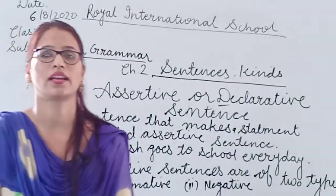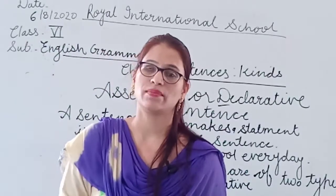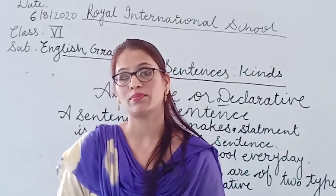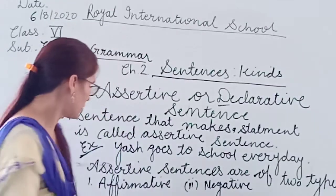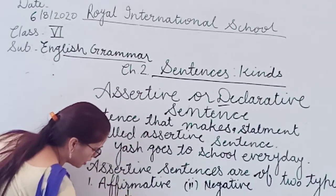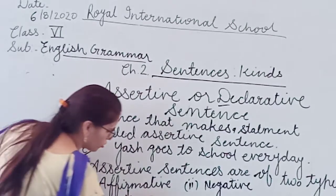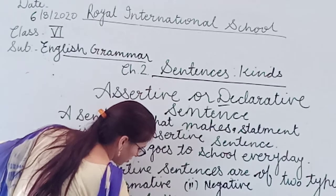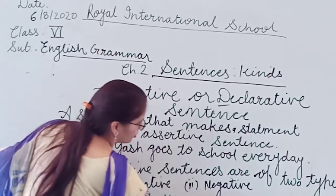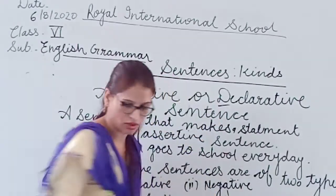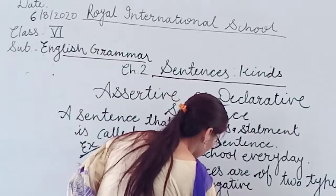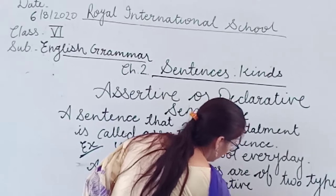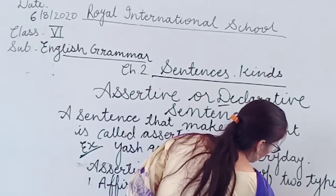Sentences that give a positive statement are affirmative sentences, and sentences that give a negative statement are negative sentences. Affirmative sentences convey positive thought, and negative sentences convey negative thought.